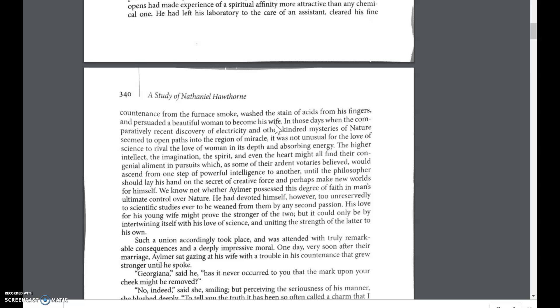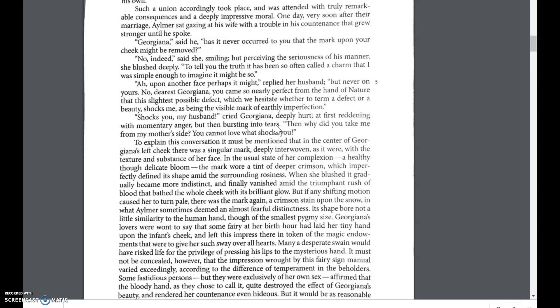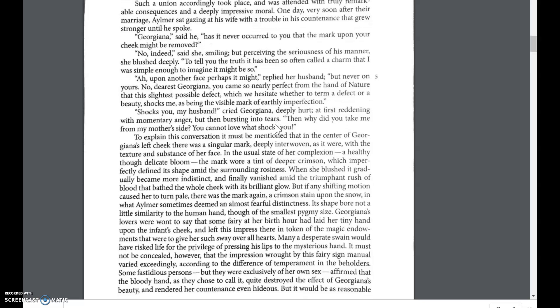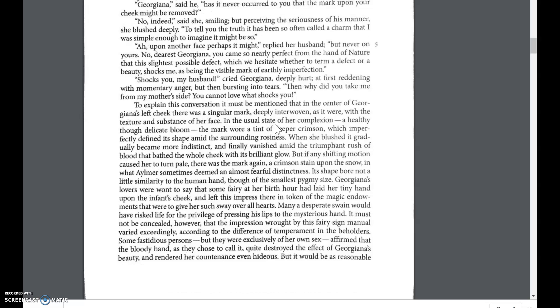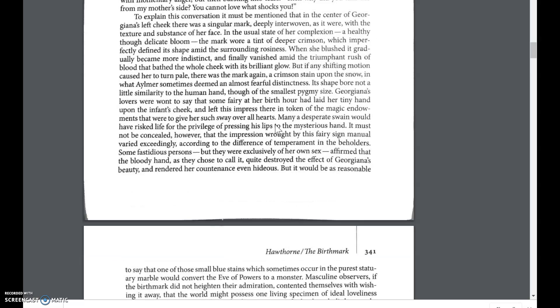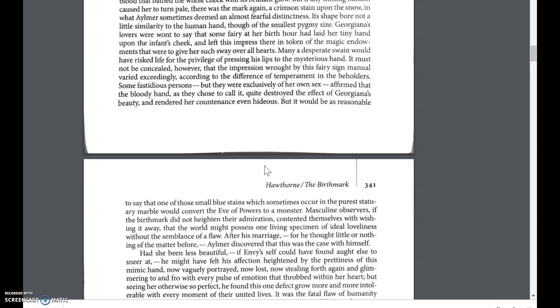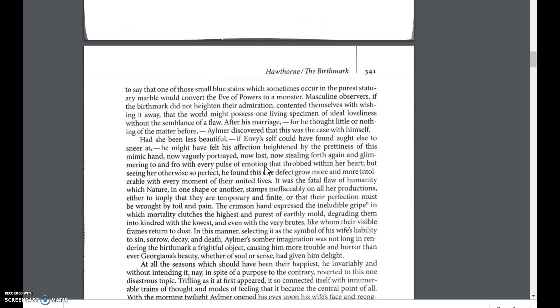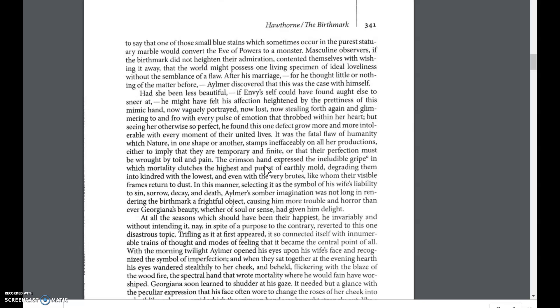The husband convinces Georgiana that he will love her more if she has the birthmark removed. He browbeats her again and again into deciding that, in order to make her husband happy, this is something she needs to do. And she really jumps into it wholeheartedly — 'Let's get rid of it; my husband will love me more; whatever he wants to do, that would be great.'